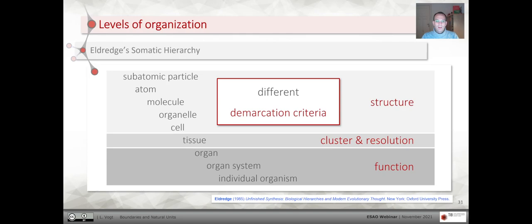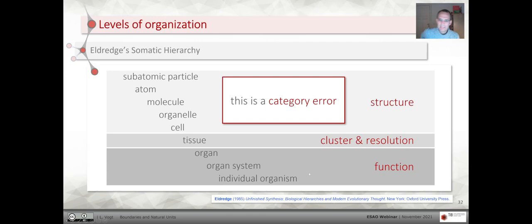In the Eldridge somatic hierarchy, the first five levels are more or less defined on structural or physical criteria. Then we have the tissue level, which is basically just a cluster or aggregate of cells at a resolution where we cannot distinguish individual cells anymore. Then we have three layers — organ, organ system, individual organism — which are functionally defined. That results in a category error: if we take an individual single cell like a bacterium, it would be both an individual organism and a cell simultaneously, situated in two different levels at the same time, which doesn't make sense.